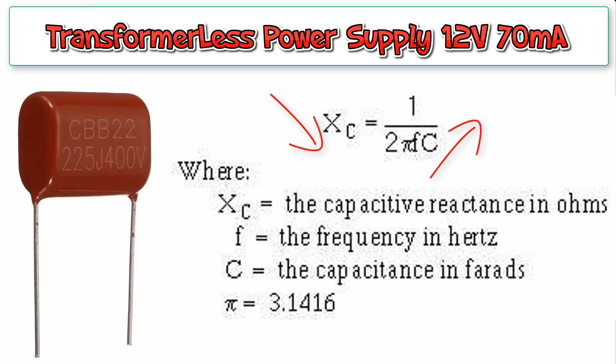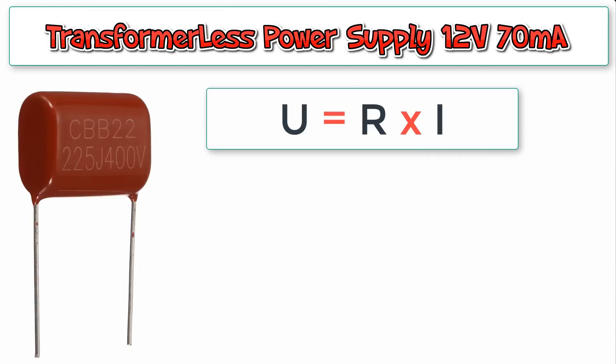If the capacitance increases the reactance decreases giving a large current to the output.